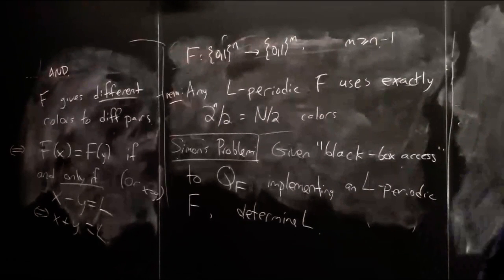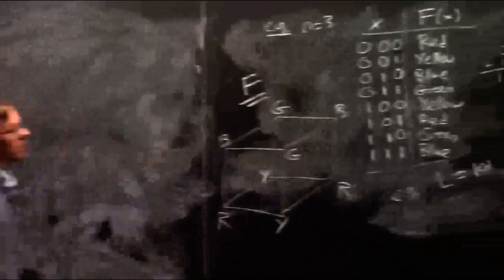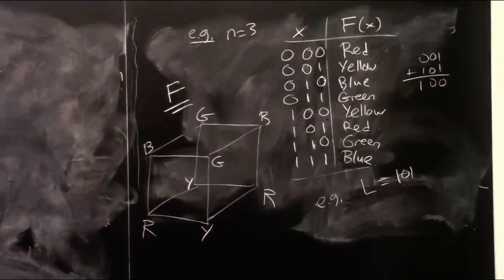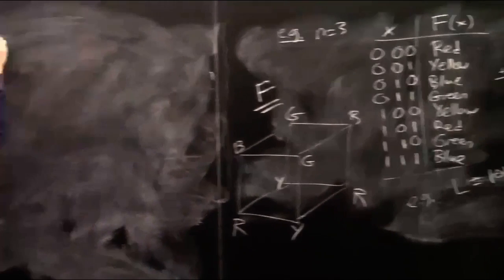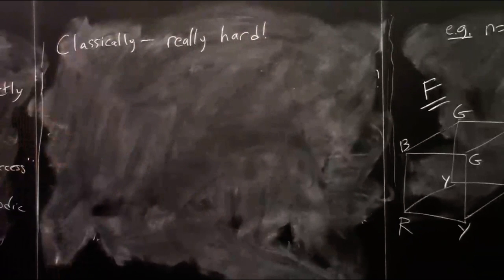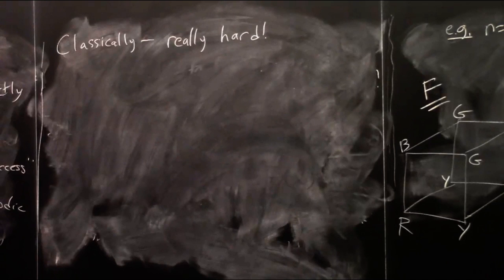Before diving into the quantum algorithm, let's think about the potential for a classical algorithm. Forget all quantum — imagine you have input-output access to a function that's L-periodic, with n really large like a thousand, and you're trying to figure out L. This is really hard, even allowing a randomized algorithm.